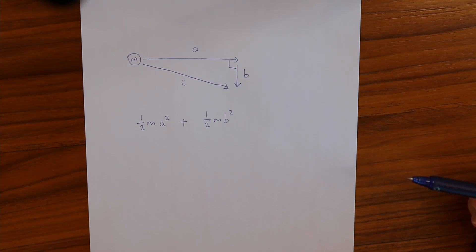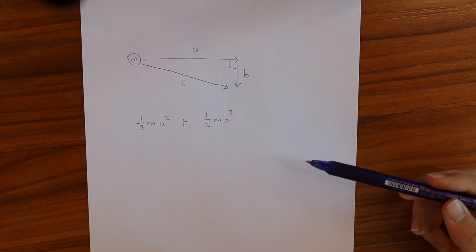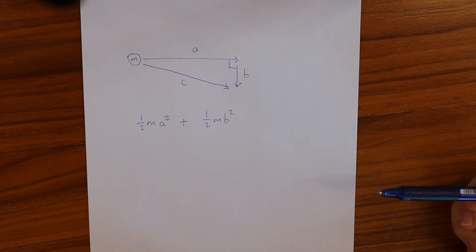What we can do now is use the fact that energy must be conserved to prove the Pythagorean theorem must be true. We know that the amount of energy put into the object must equal the amount of energy it has at the end.